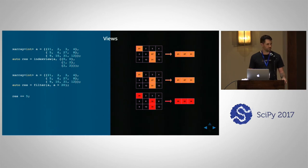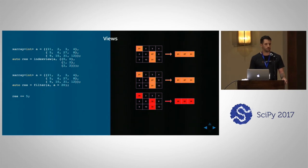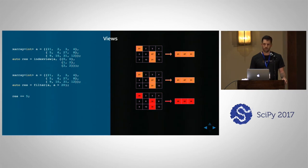We have two versions of NumPy fancy indexing. One is called the index view, where you provide the indices of interest. The other is a filter, where you provide a predicate that defines whether you are interested in a certain index or not — which prevents intermediate allocation.